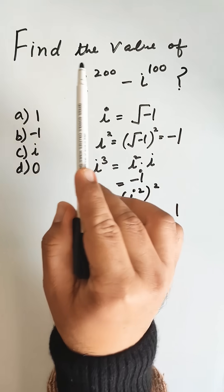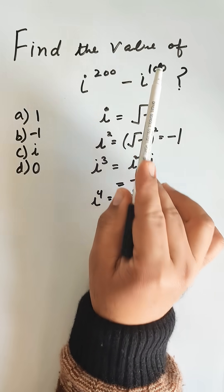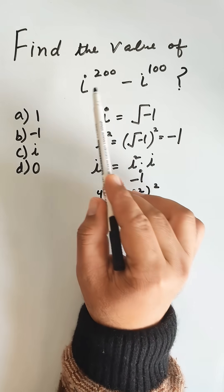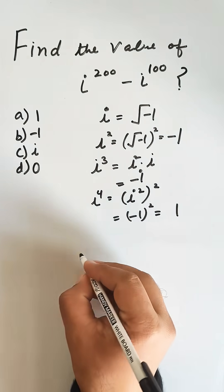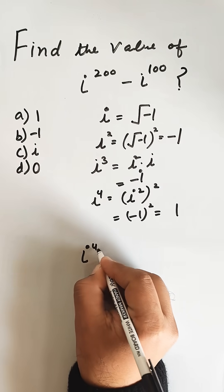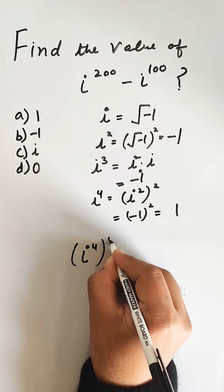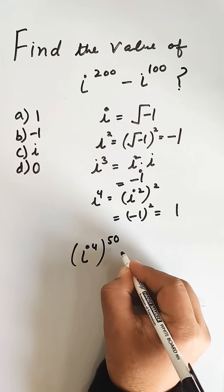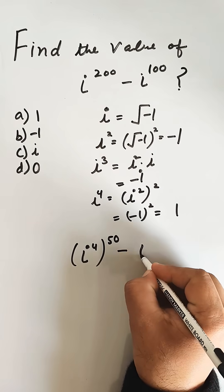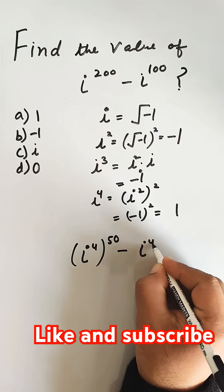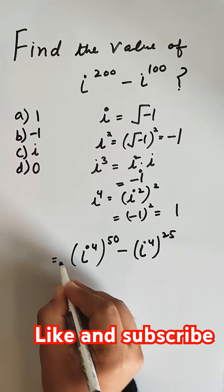Now we have to find the value of iota power 200 minus iota power 100. Iota power 200 can be written as iota power 4, whole power 50, minus iota power 100, which can be written as iota power 4, whole power 25.